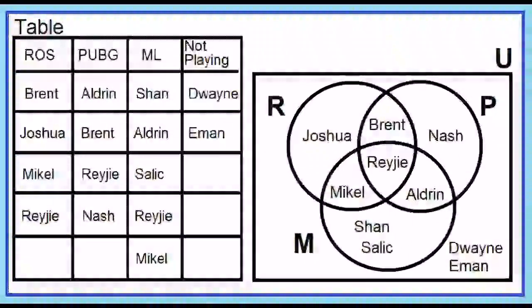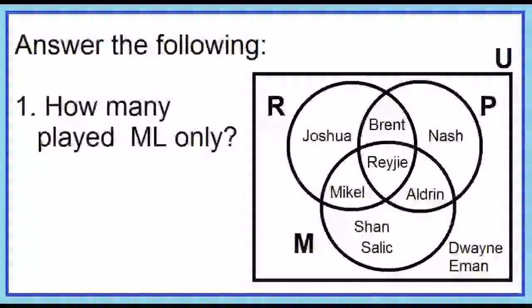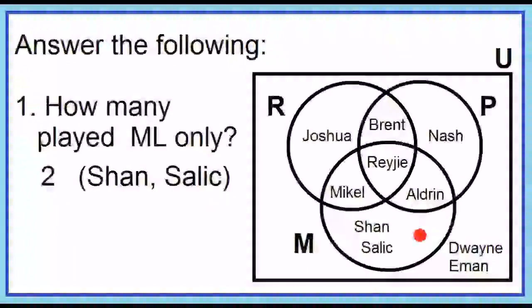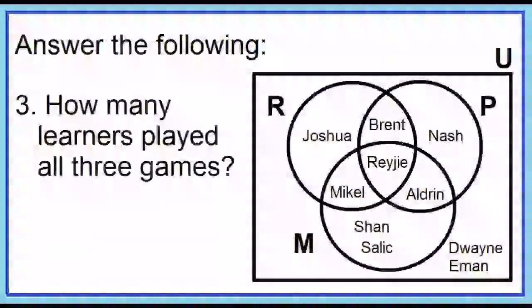Let's answer the following questions using the Venn diagram. How many played ML only? Two — Shan and Salic. How many learners played ROS and ML only? One — it's Michael. How many learners played all three games? One — it's Rei-G.